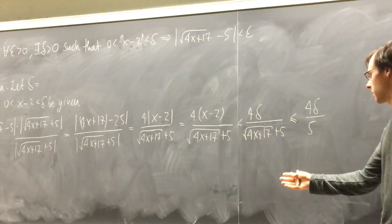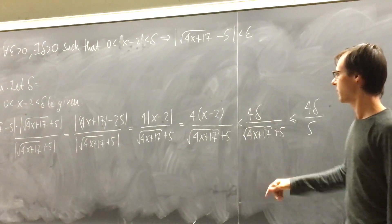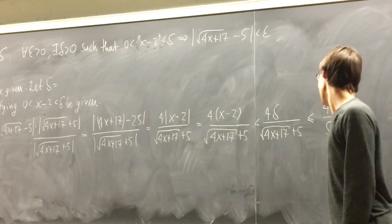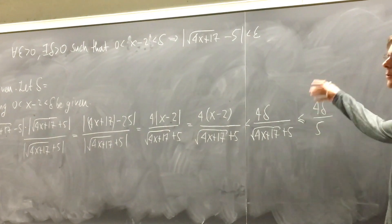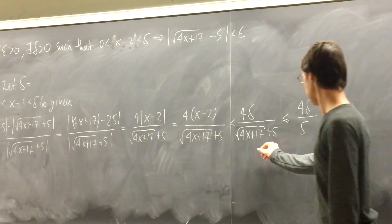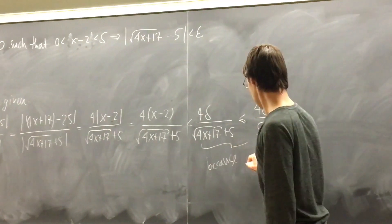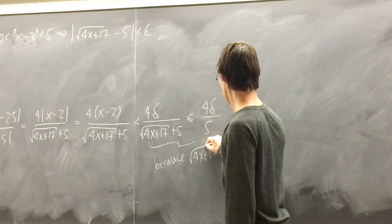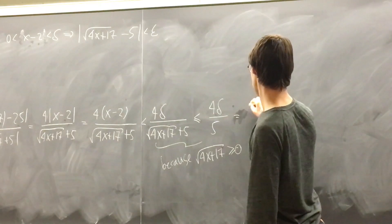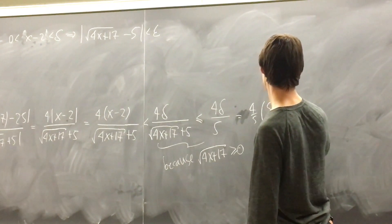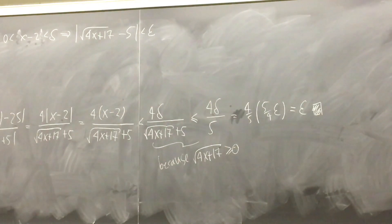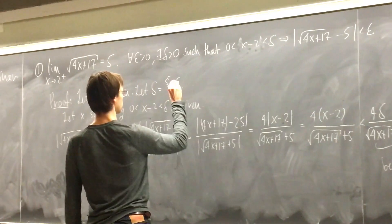Now we have 4·delta over 5, which contains only constants. We can set that expression equal to epsilon and solve for delta. This gives delta = 5/4 · epsilon, so the proof works. But to simplify: since 4/5 · delta is less than delta, we can just say this is less than delta, and then let delta equal epsilon. The proof is done.